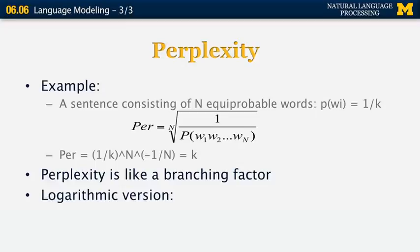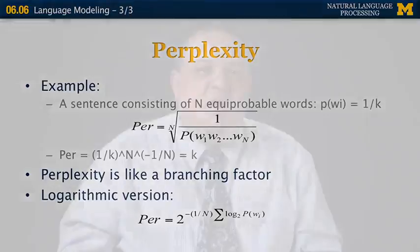There is also a logarithmic version that can be used. In that case, we just take the base 2 or base 10 logarithm of the previous formula — so we have 2 to the power of minus 1 over n times the sum of the logarithms of the probabilities of the individual words. This should give us the exact same value as the non-logarithmic version.